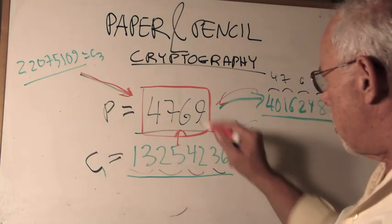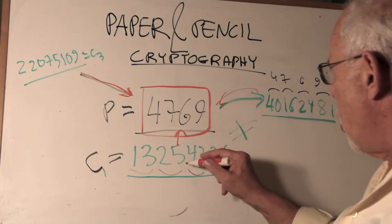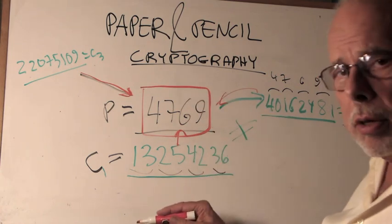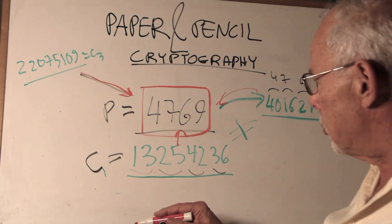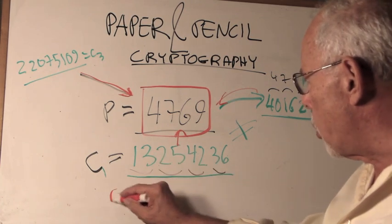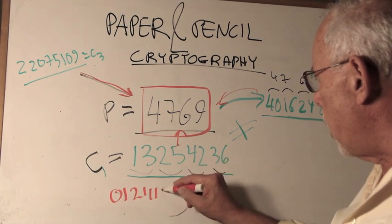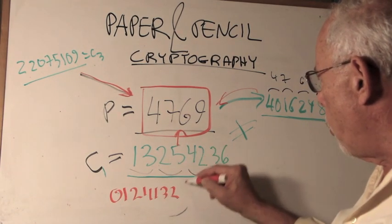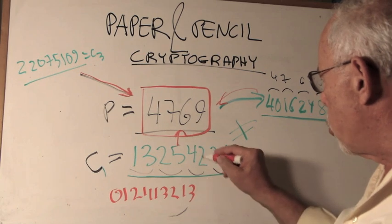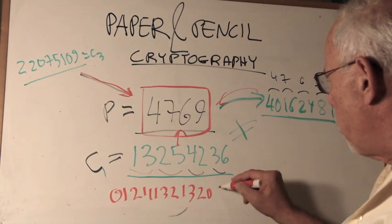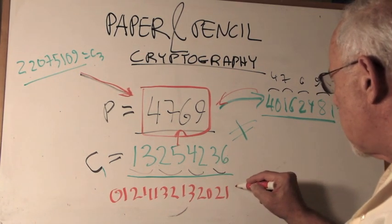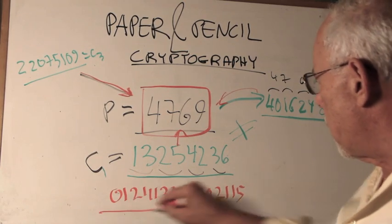If we encrypted this to this, we can now re-encrypt it. Meaning, 1 becomes 0, 1. 3 becomes 2, 1. 2, 1, 1. 5, 3, 2. 4, 1, 3. 2, 2, 0. 3, 2, 1. 6, 1, 5. So, what have we done? We have taken this as a plaintext, encrypted it into a ciphertext, and re-encrypted it.